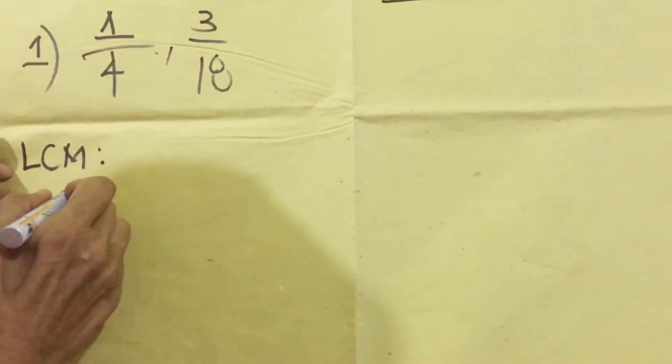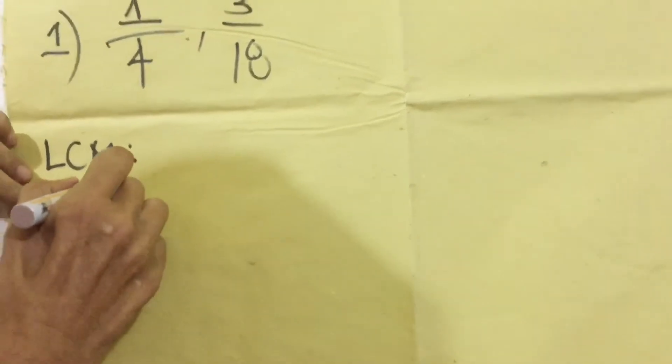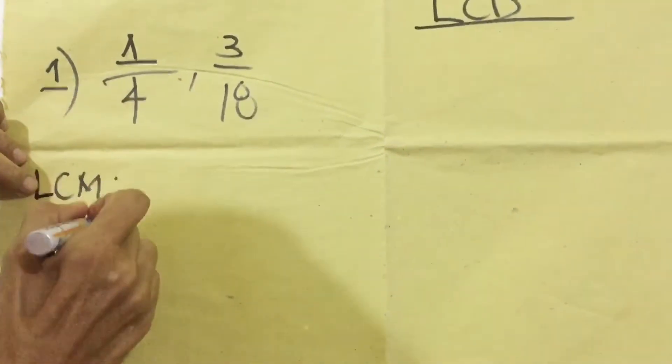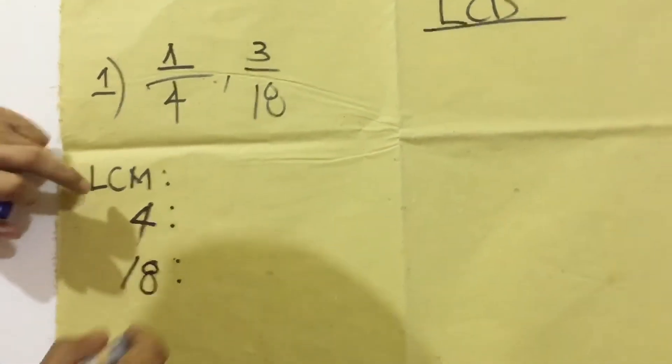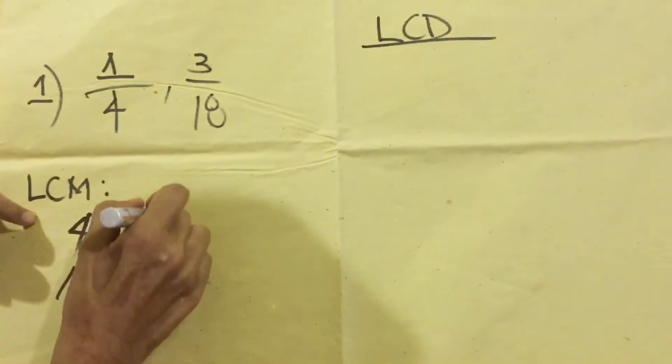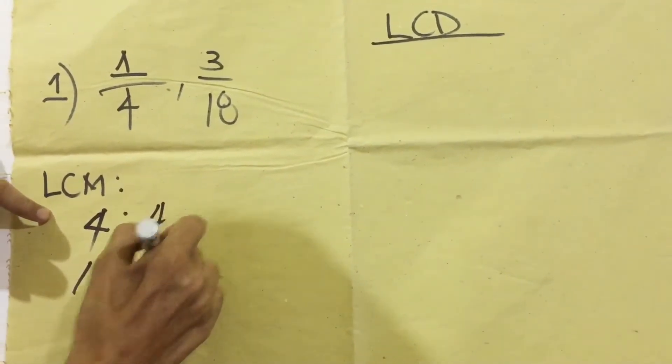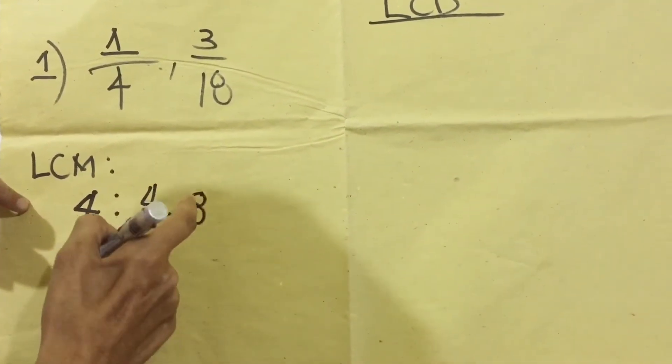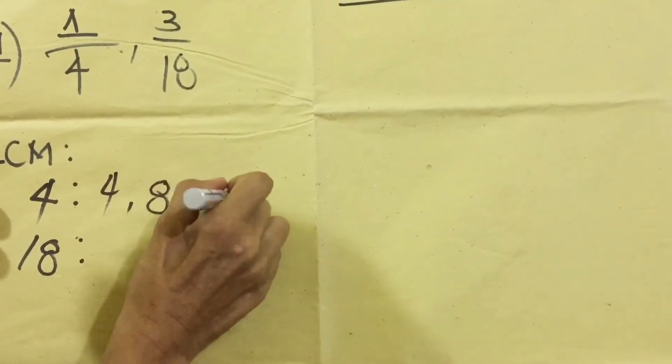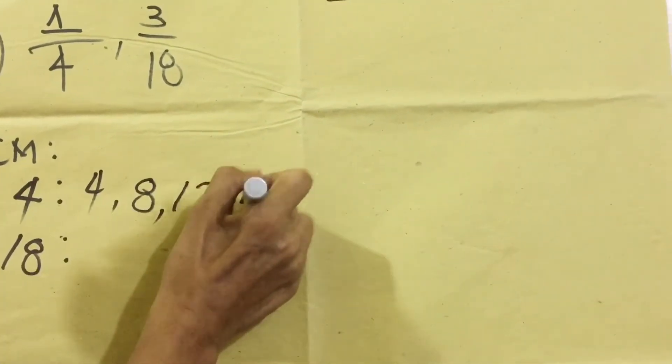For the denominator 4, we write 4, and 4 plus 4 equals 8, 8 plus 4 equals 12, 12 plus 4 equals 16, 16 plus 4 equals 20, 20 plus 4 equals 24.